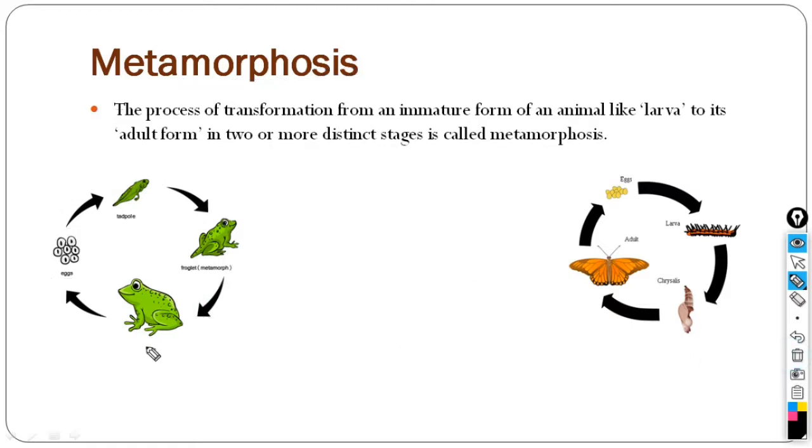If we look at the egg, the eggs become tadpole, the immature form. It becomes more mature, then it becomes more mature, then it becomes froglet.